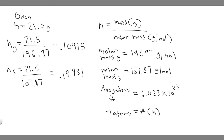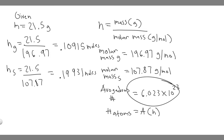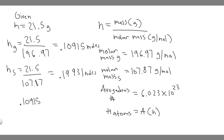Now since we have the moles, we're going to convert into atoms. You actually don't have to do this step because we're just taking a ratio — we're multiplying both by the same number. But we'll go ahead and do it. So take 0.10915 and multiply by 6.023 times 10 to the 23. Doing that gives us 6.57 times 10 to the 22 atoms for gold.